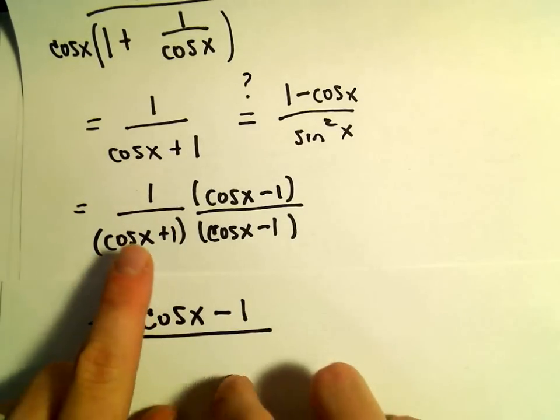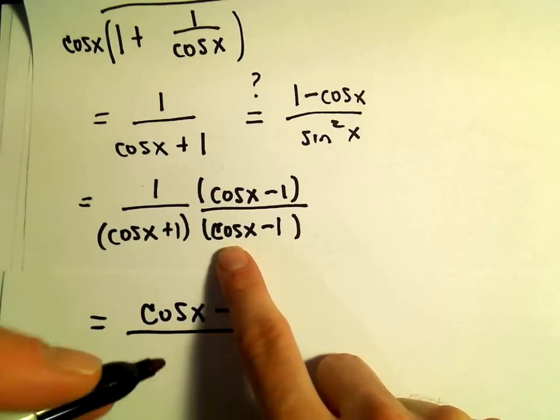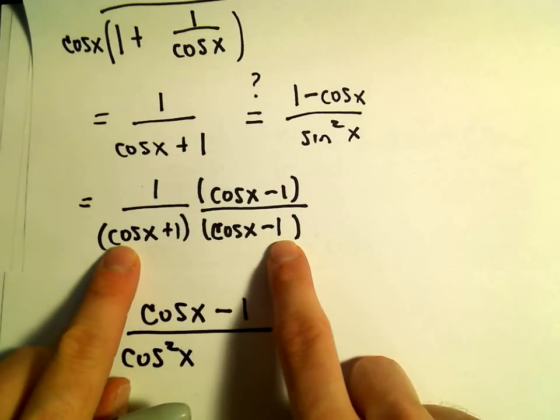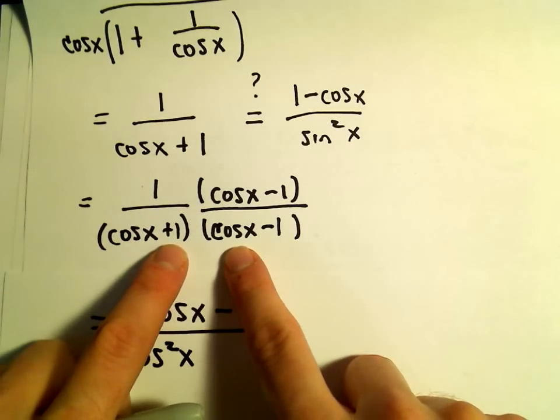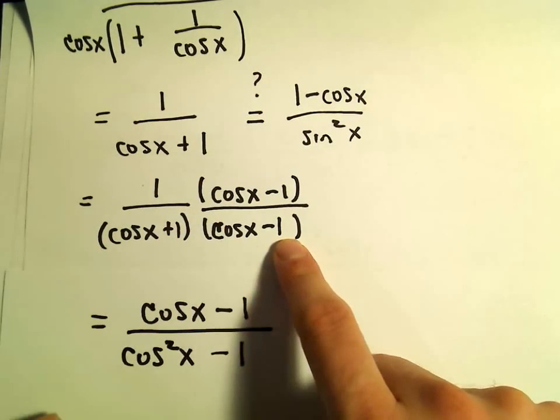And the other thing I'm recognizing is that this is going to be a difference of perfect squares. Cosine and cosine is cos²(x). We'll get a -cos(x) + cos(x), and those will cancel out. And then our last term will be -1.